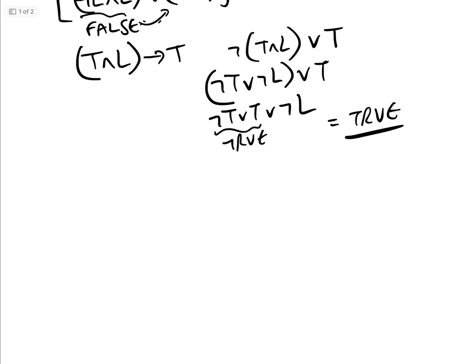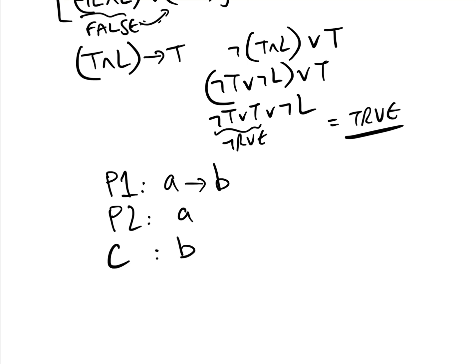This is actually called the law of detachment. As a general rule: premise 1 is A implies B (or if A, then B), premise 2 is A, and the conclusion is B. By the law of detachment, this is always a valid argument.